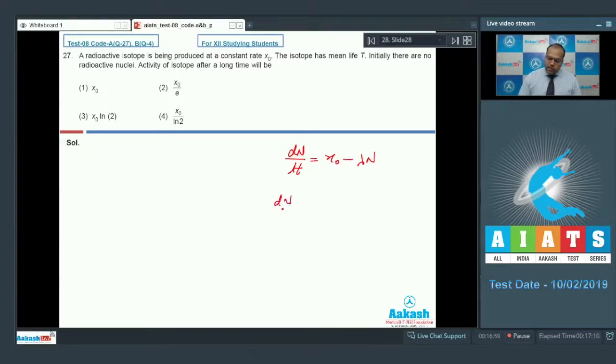So on rearranging, I can write in this way, X0 minus lambda n is equal to dn by dt. So at T equal to 0, the number of active nuclei is 0 and at any time T, the number of active nuclei is n. So if I solve this equation, the value of n comes out to be X0 by lambda into 1 minus e raised to the power minus lambda into T.